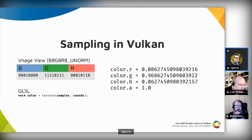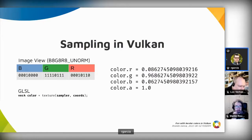In the example shown here, we have an image view with three 8-bit color components in BGR order and in unsigned normalized format. This means each image pixel is stored in memory using three bytes, with each byte corresponding to the blue, green, and red components in that order. When we read pixels from that image view, we want to get back normalized floating point values between zero for the lowest value and one for the highest value.